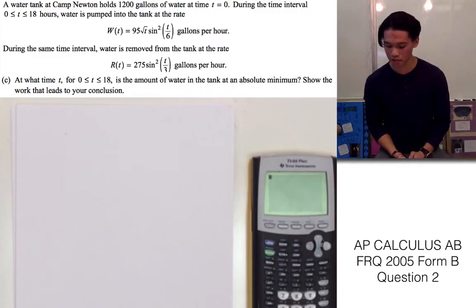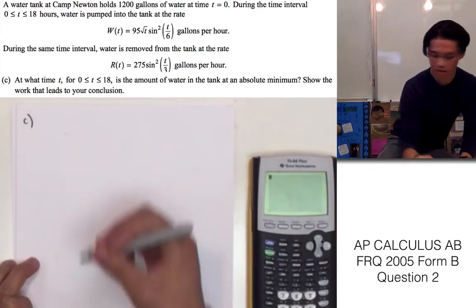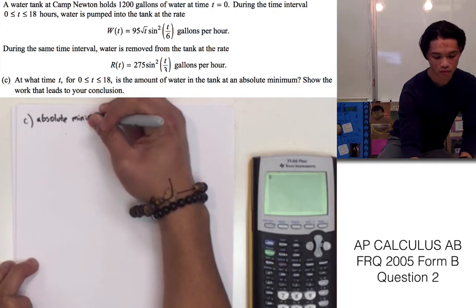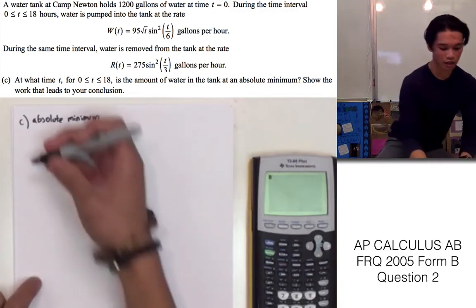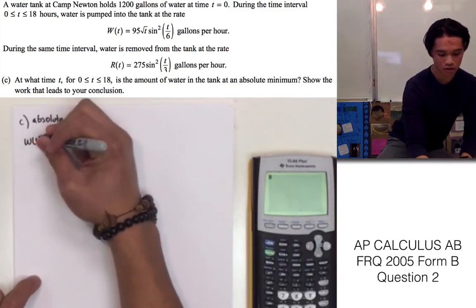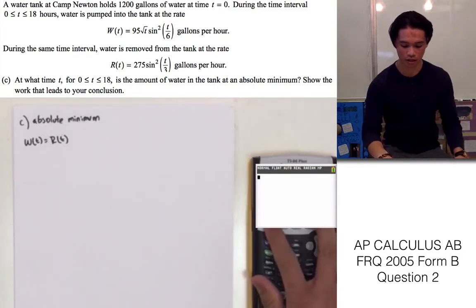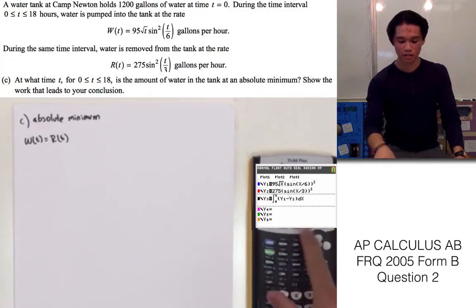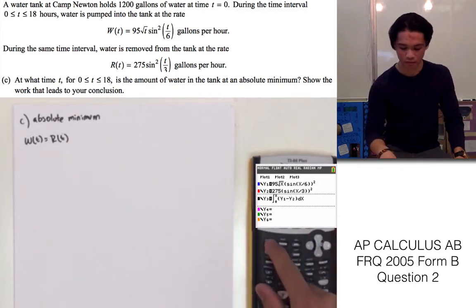Part C says: at what time t between 0 and 18 is the amount of water in the tank at an absolute minimum? Show the work that leads to your conclusion. For this, we're going to have to find the critical numbers of the function, which is where W of t equals R of t. We go to our function — we have the integration of the amount of water in the tank, so we can turn that one off — and graph.